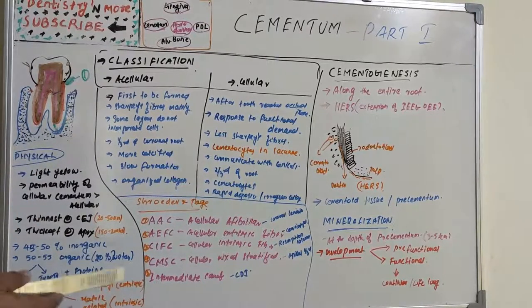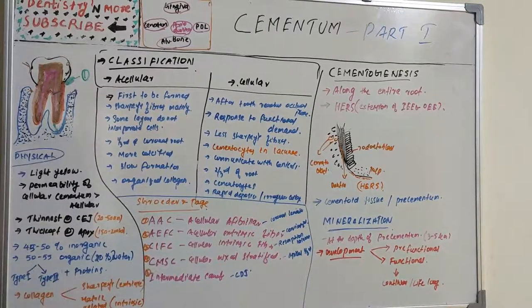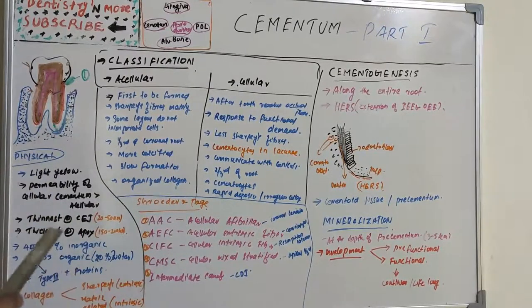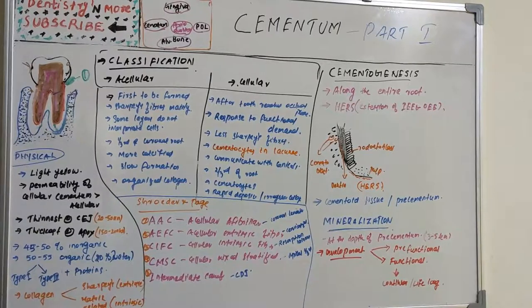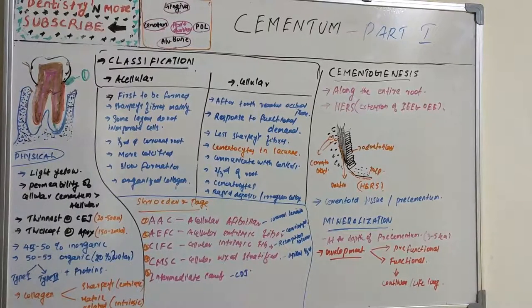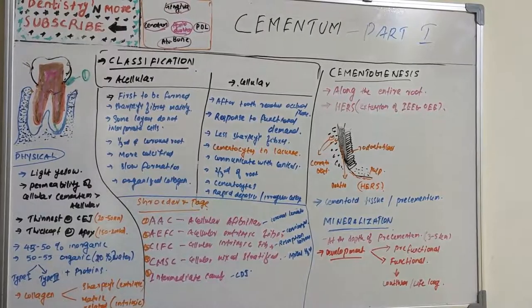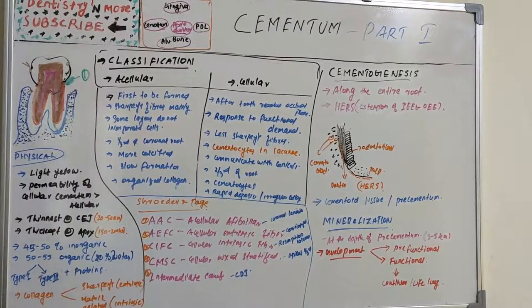The second source is fibers belonging to the cementum matrix — these are intrinsic fibers produced by cementoblasts. Extrinsic fibers are produced by periodontal ligament fibroblasts, whereas intrinsic fibers seen in the cementum matrix are formed by cementoblasts. Cementum has the highest fluoride content and is readily decalcified in acidic conditions because of the lower crystallinity of its mineral component.